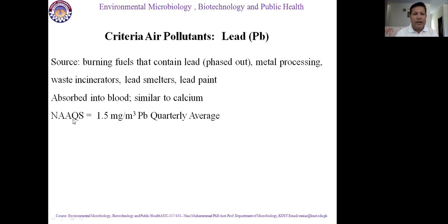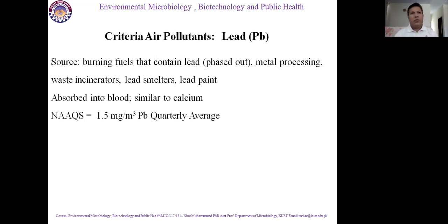The National Ambient Air Quality Standards state that 1.5 milligrams per meter cube of lead as a quarterly average is acceptable. For three months, if the concentration of lead is at 1.5 mg/m³, it is acceptable. If the concentration exceeds this, it becomes a dangerous zone. If the concentration is less than this, that is more suitable and better.